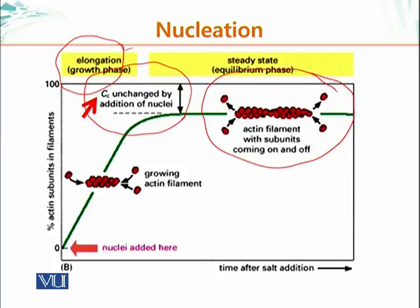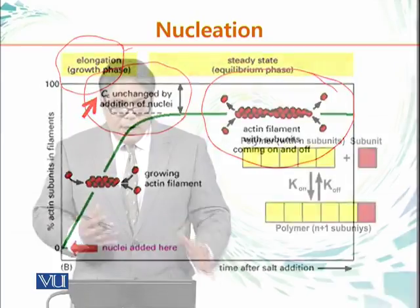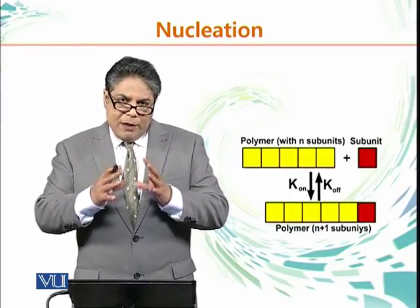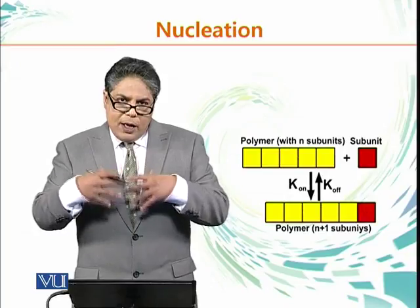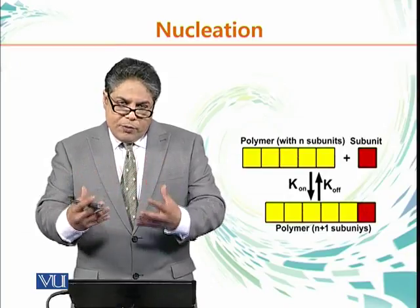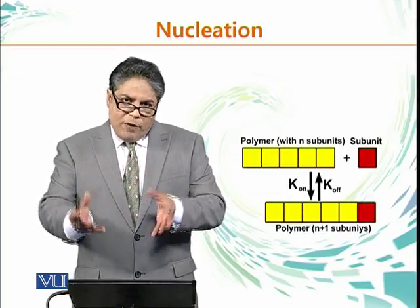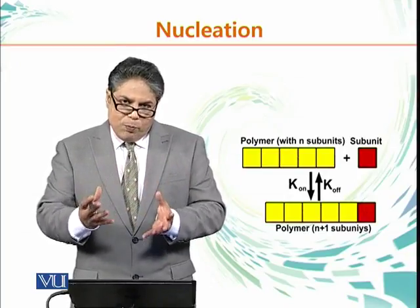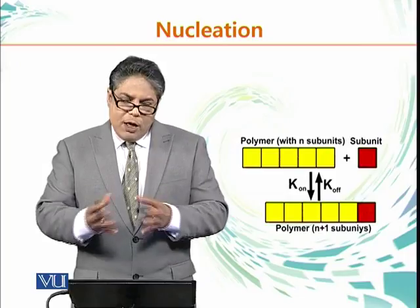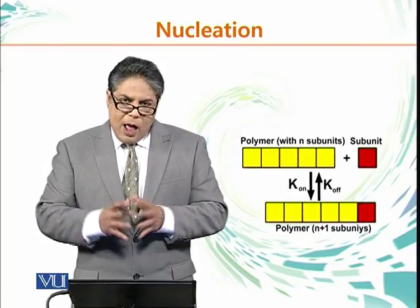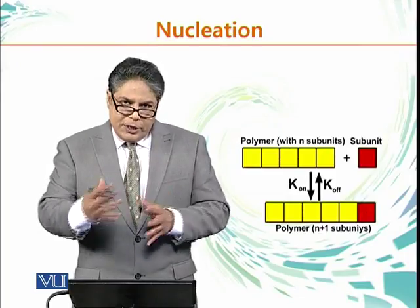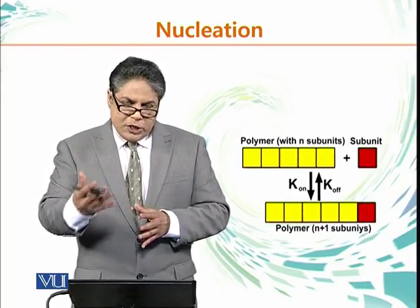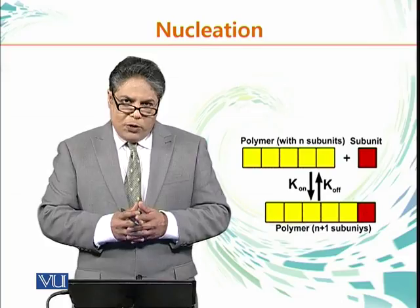The critical concentration remains unchanged even when nuclei are added, because it is constant for a given amount of monomer in the experiment. We have now discussed the rules of addition and subtraction of monomers from the polymer, and we will continue this discussion in the next module.